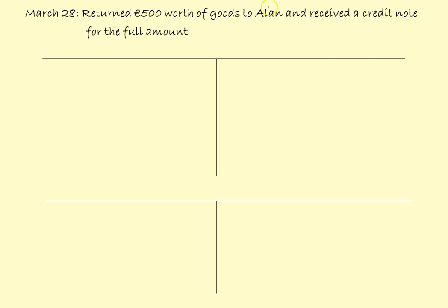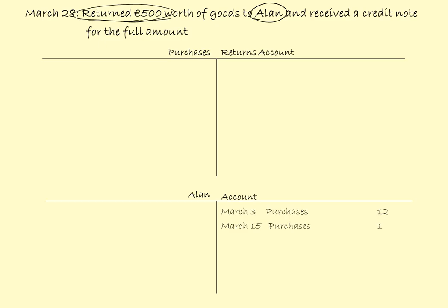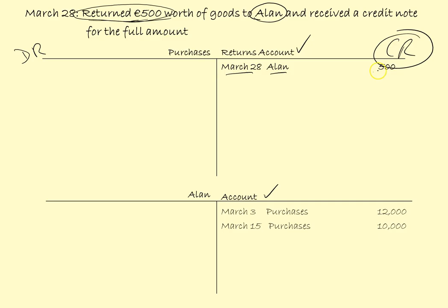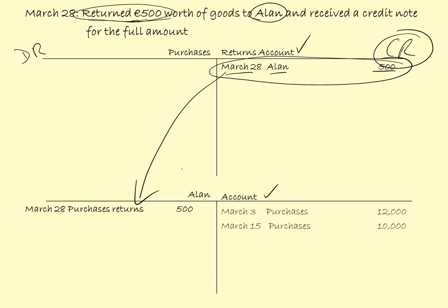March the 28th: returned 500 euro worth of goods to Alan and received a credit note for the full amount. We are sending goods back to Alan, so we need a purchases returns account — this is a new account. Purchase returns is a reversal of purchases. When you have purchases you put it on the debit side; with purchase returns the entry will be on the credit side. So on the credit side of the purchase returns account: March the 28th, Alan, 500. And on Alan's account we will debit: March the 28th, Purchases returns, 500.